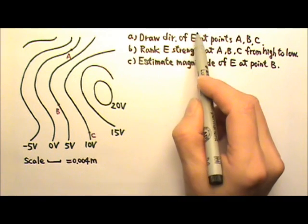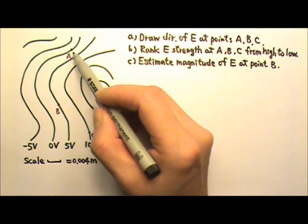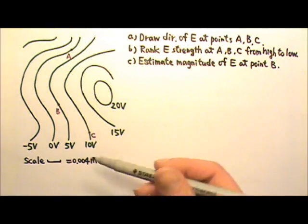The direction of the electric field is always perpendicular to the equipotential surfaces. And if we follow the field lines, the potential should go down.